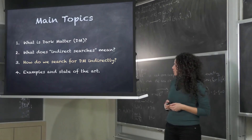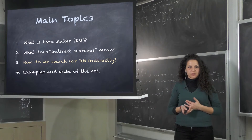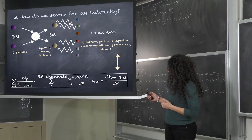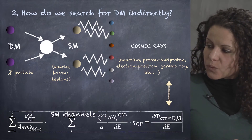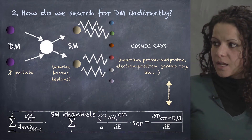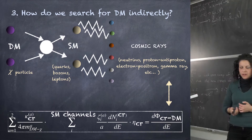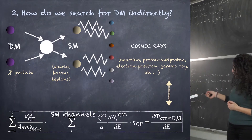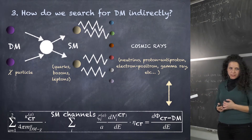Let's go to the third point of this lesson: how do we search for dark matter indirectly? This is the main equation that explains more or less what I have said so far. On the left side of this equation we have the gamma ray flux that we detect on Earth, and here we have the theory. I will now explain this equation in detail.